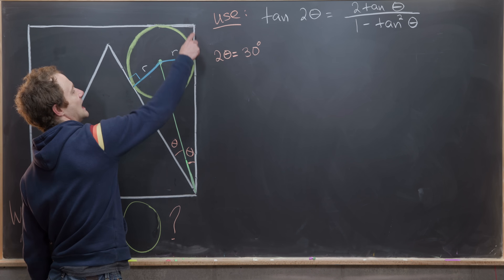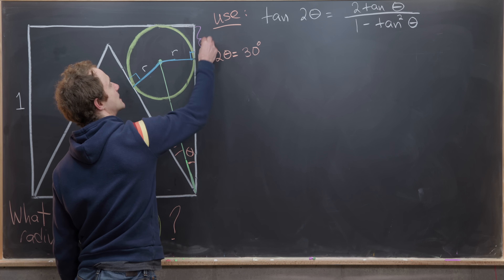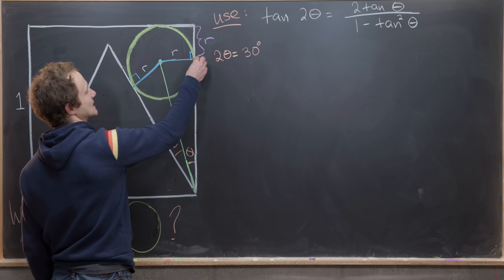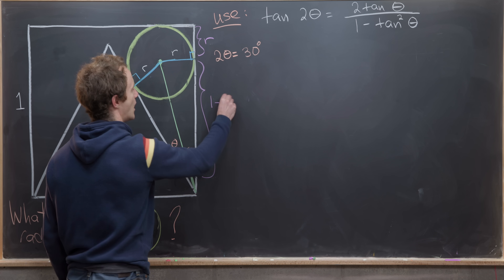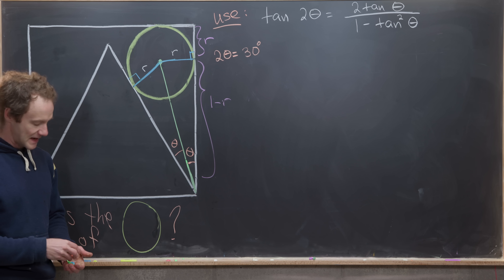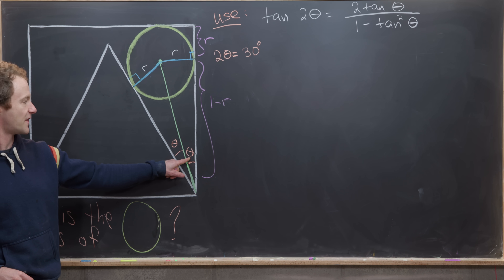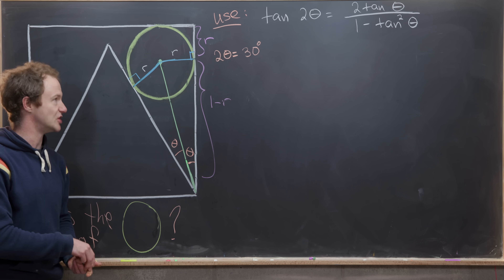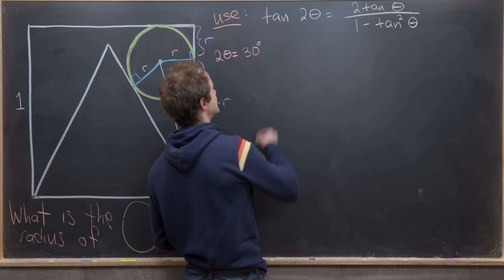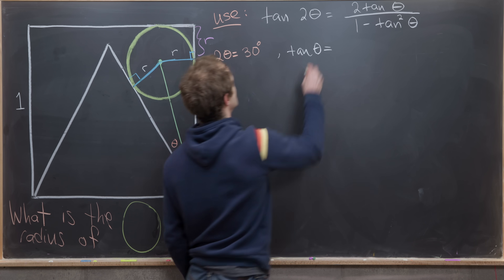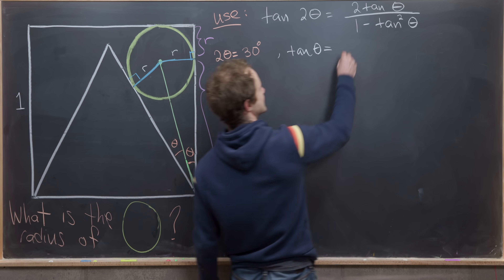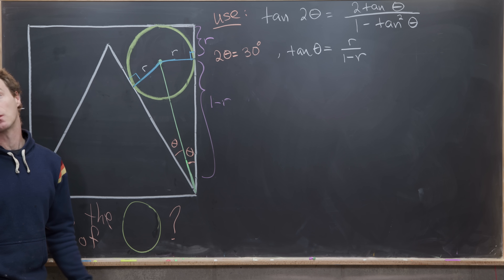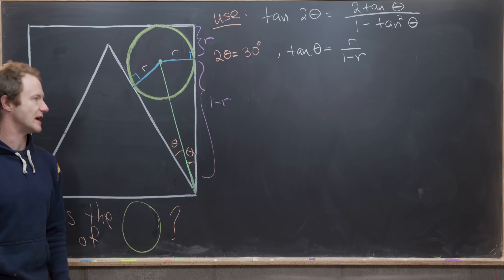The segment from the corner to where the circle touches the right side of the square has length r, since the circle sits flush against that side. The remaining portion of the side below the contact point has length 1 − r. So tan(θ) = opposite/adjacent = r / (1 − r).